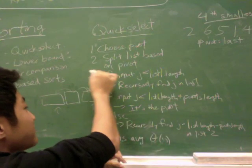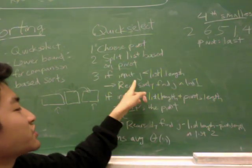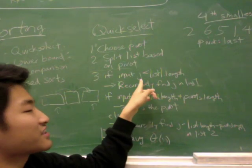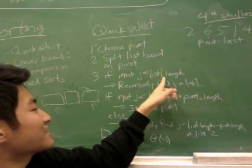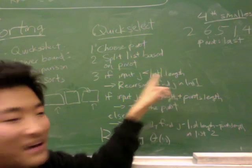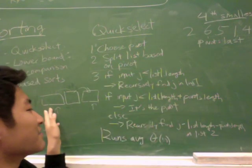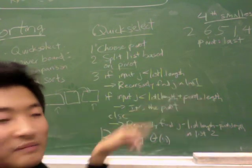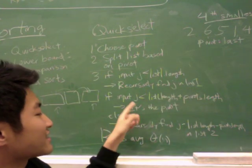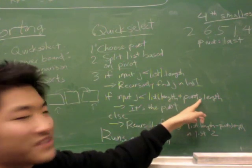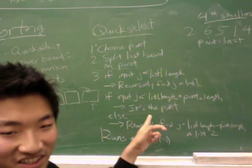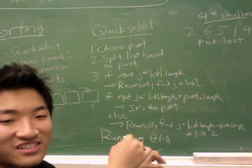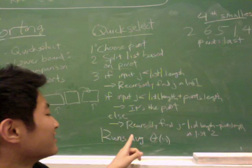This part will be different here. If input j is less than list one dot length, that means I'm going to find an element that's really small and so I can just recursively find j in list one. If input j is less than list one dot length plus pivots dot length and I already did this test, that means the element at j, the jth smallest element, is a pivot.